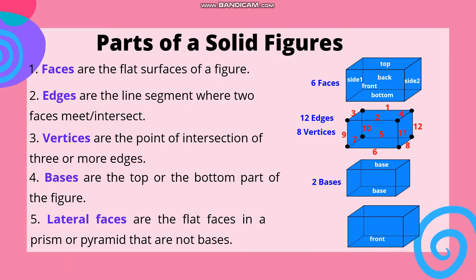So we have the front, back, side one, and side two — giving us four lateral faces in a rectangular prism.